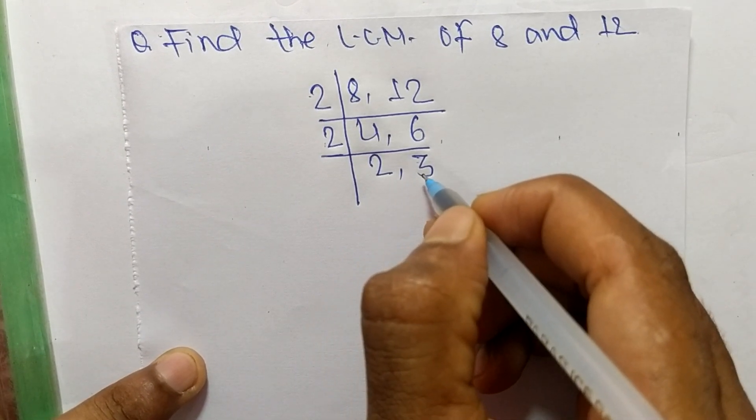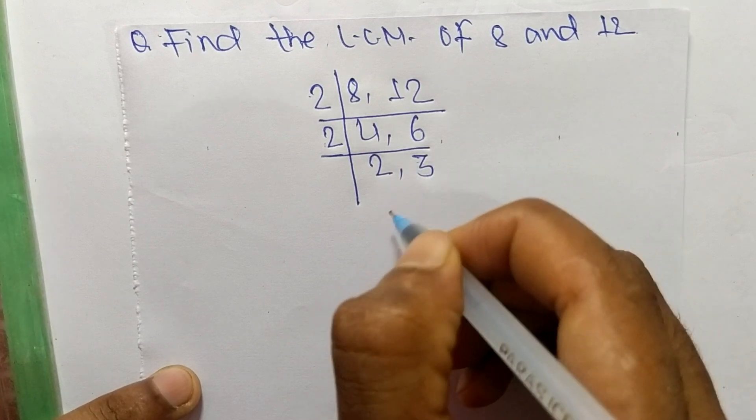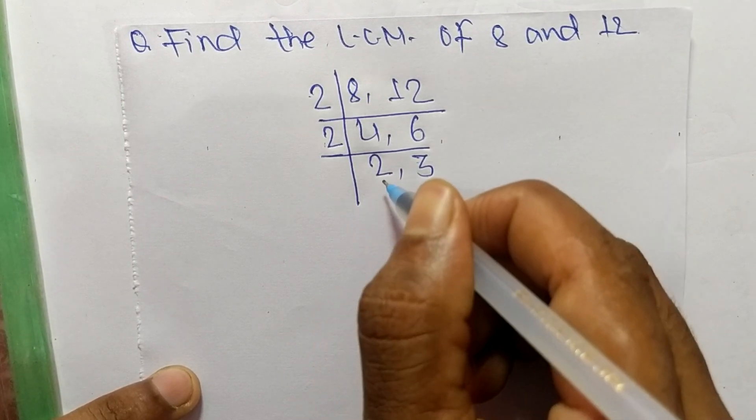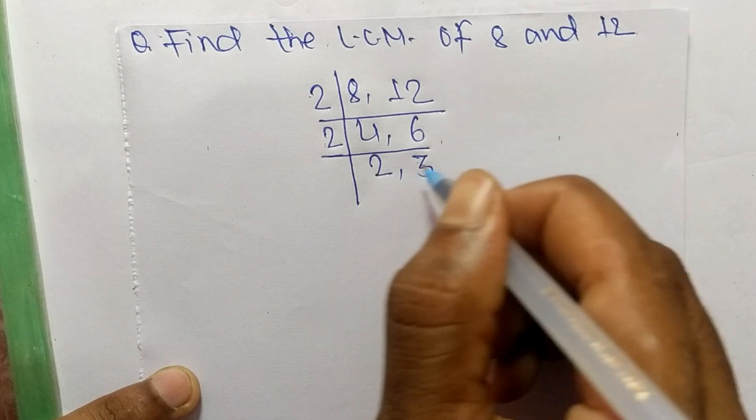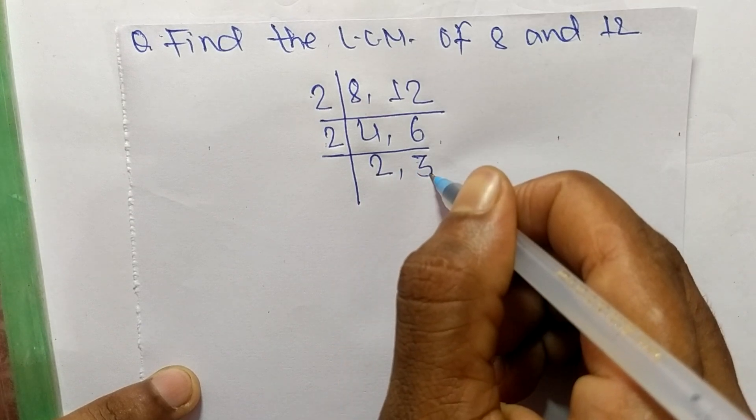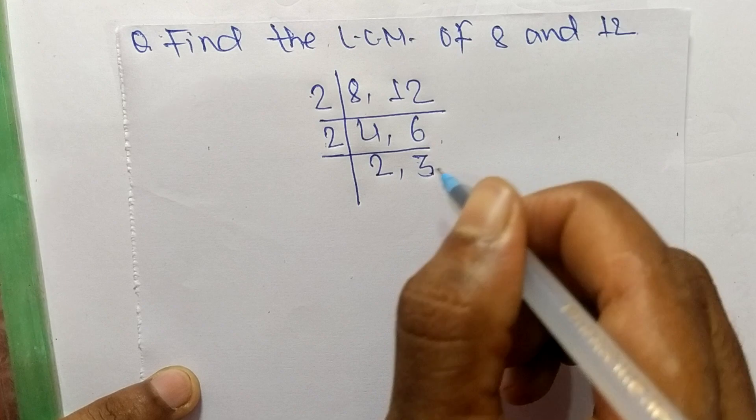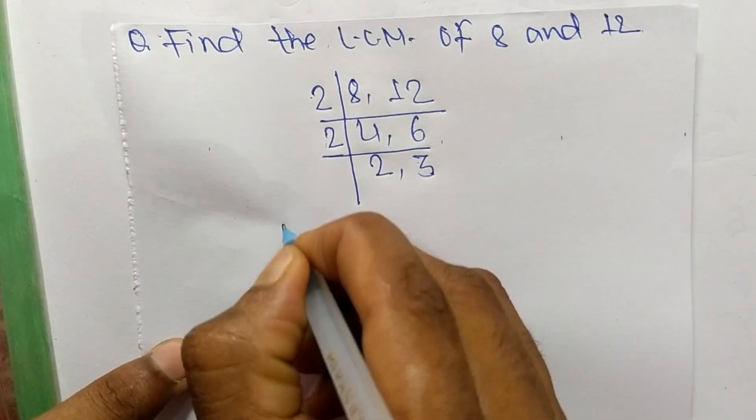So now we get here 2 and 3, which are not exactly divisible by the same number. If we take 2 then it can divide 2 but can't divide 3. And if we take 3 then it can divide 3 but can't divide 2.